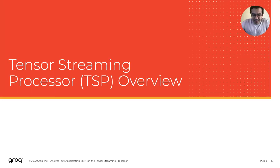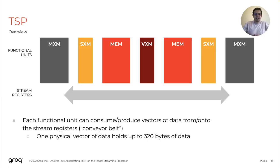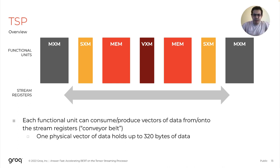Now that we've briefly covered the compute in BERT, let's talk about the Grok Tensor Streaming Processor architecture we're targeting. I will be brief in this overview and would refer the audience to the Grok ISCA 2019 paper for more detail. At its heart, the TSP is a domain-specific architecture that accelerates general machine learning workloads. It's a single core built from different heterogeneous functional units spread across the chip, which is almost symmetric across the meridian with a west and east hemisphere. The TSP also has stream registers that are responsible for moving data between functional units.